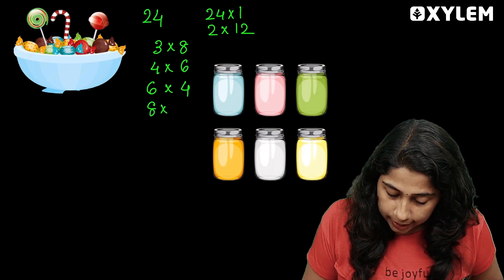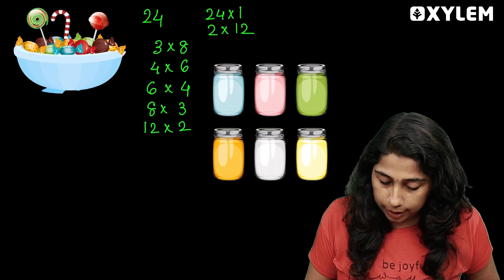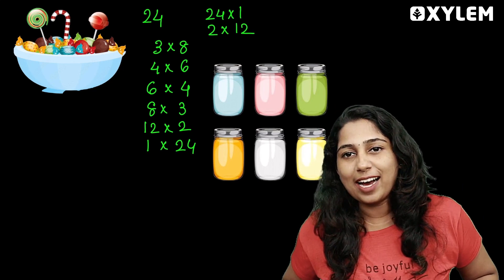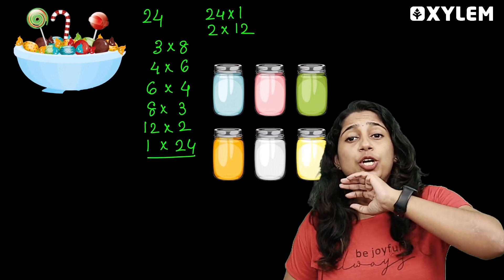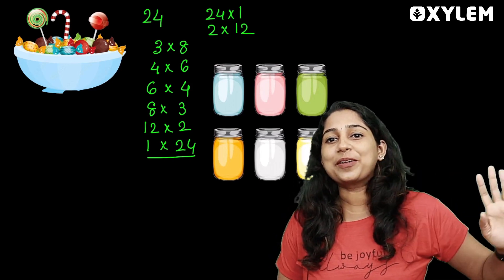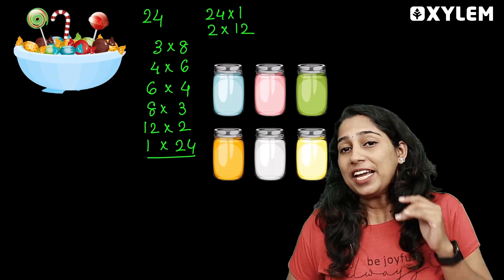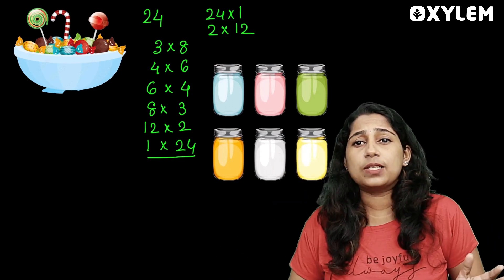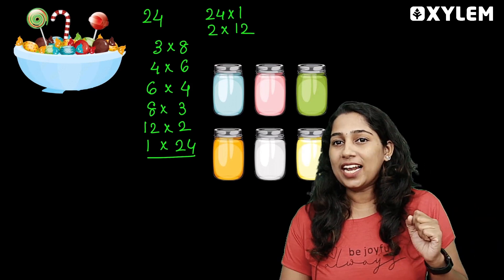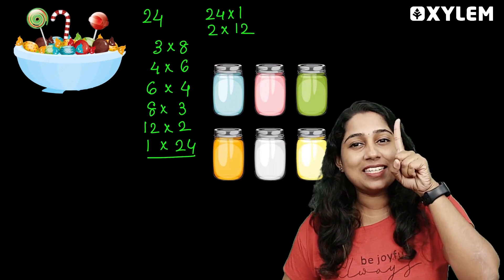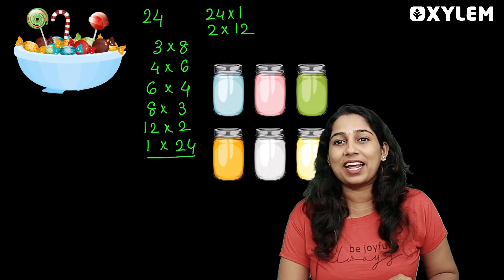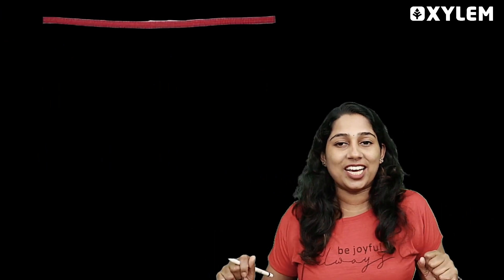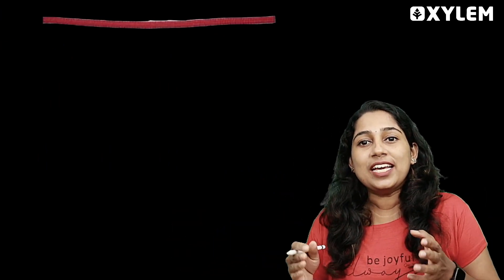You can see we distribute everything equally. We distributed 24 candies equally into different groups. This is an easy concept in mathematics. That is what we are going to do — equally cut or divide.